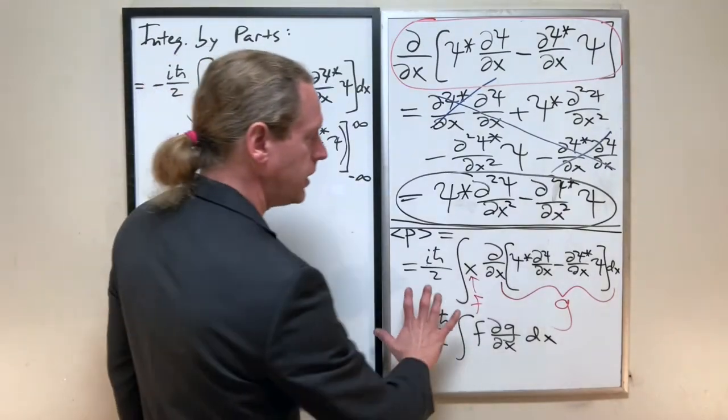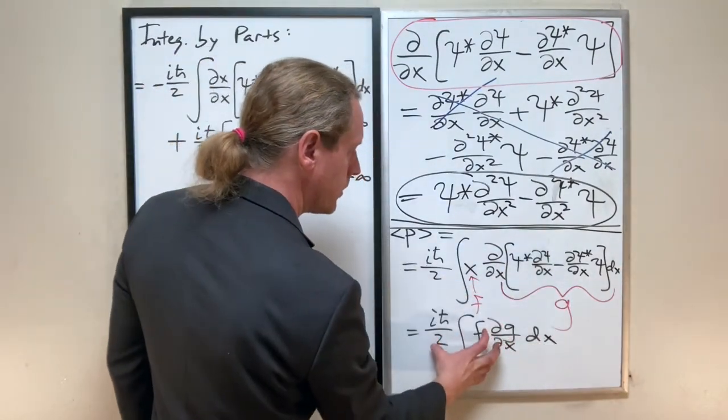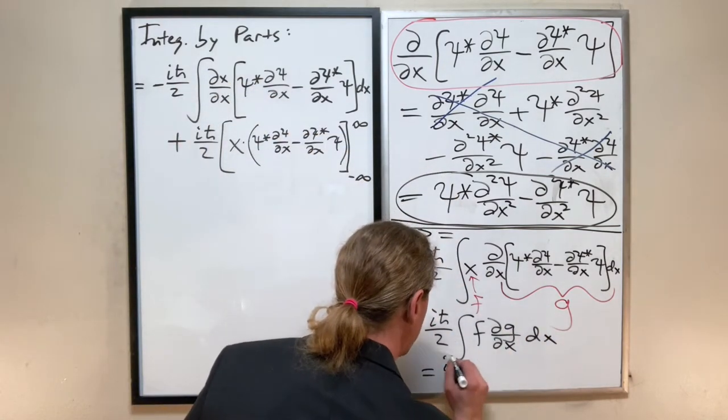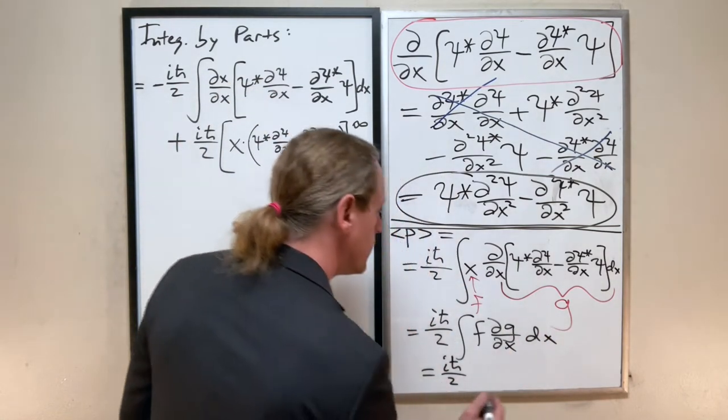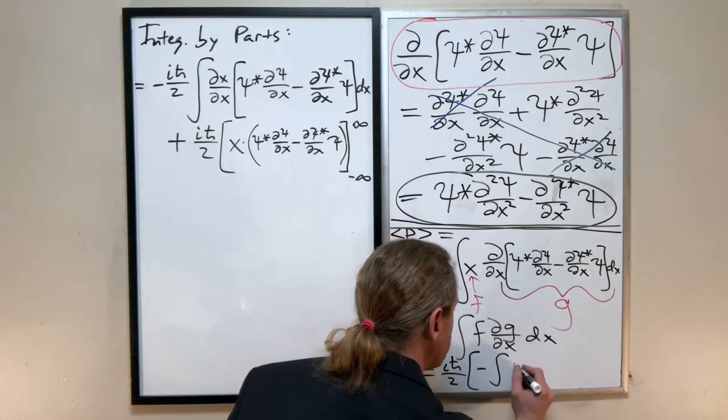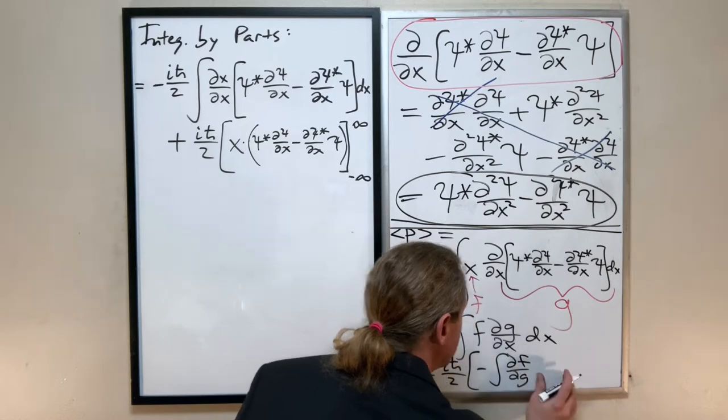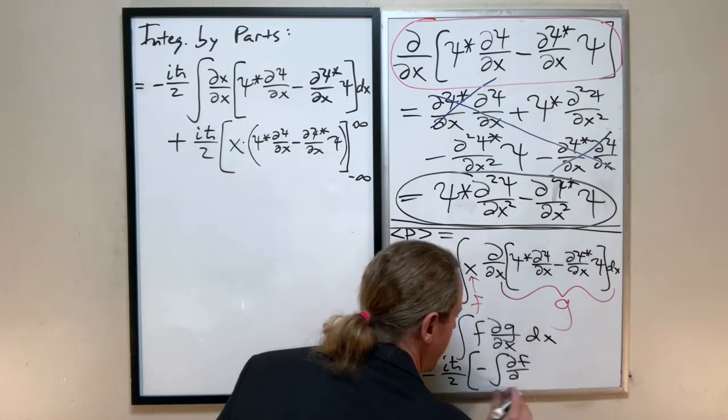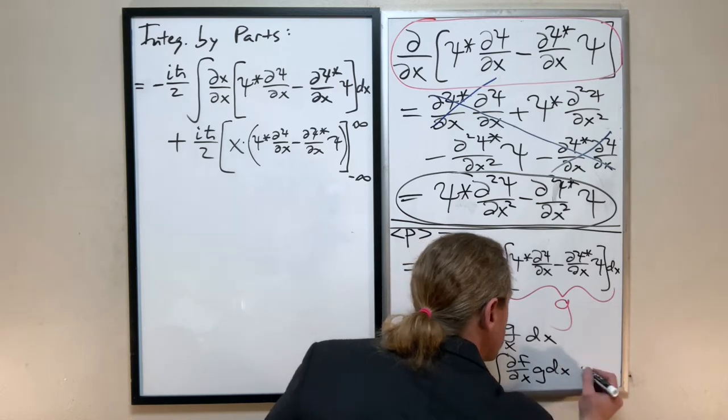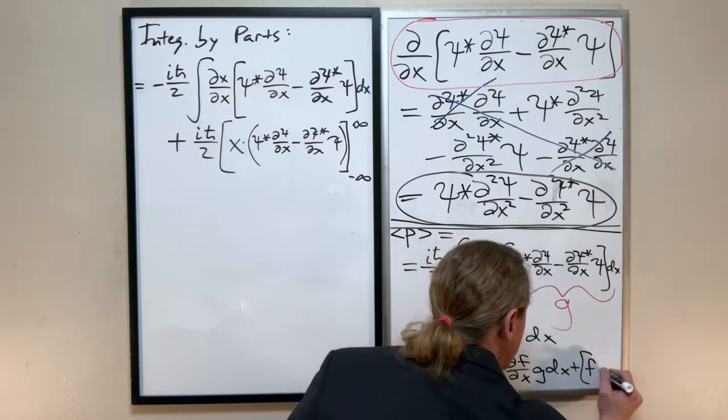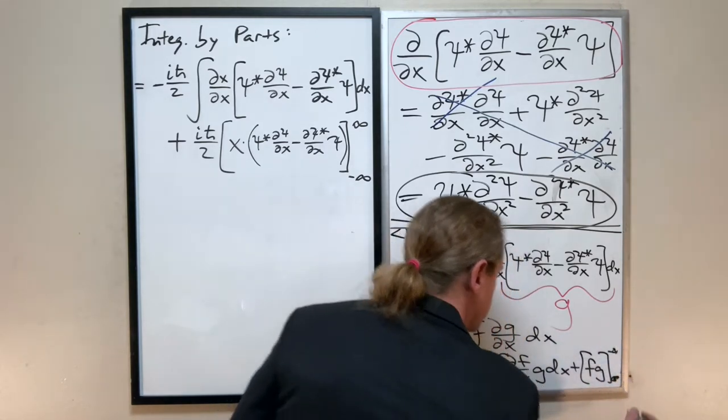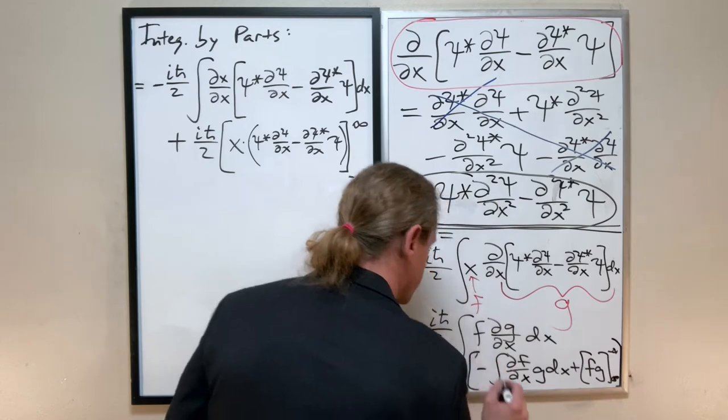Okay, so integrating this whole thing by parts. As a reminder, and I'll just write explicitly what this equals here, it equals iℏ/2, times minus integral of df/dx times g dx, plus that surface term fg at the end points, which are negative infinity and infinity.